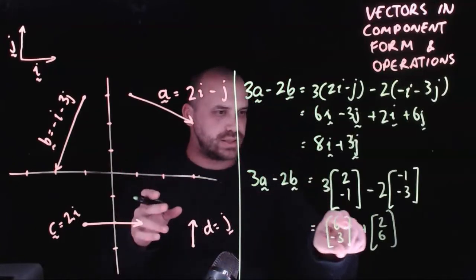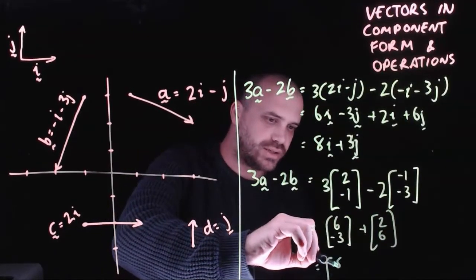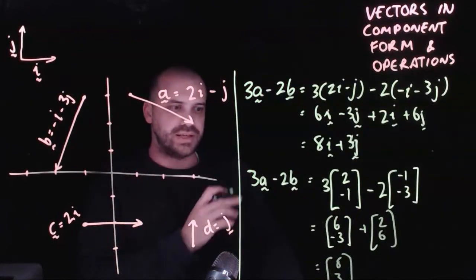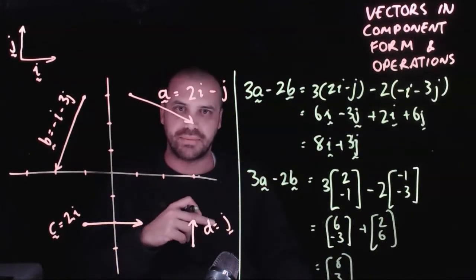And then we get 6 plus 2 is 8. And negative 3 plus 6 is 3. And there's our answer, 8, 3, same as here.